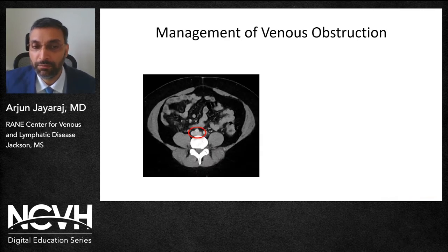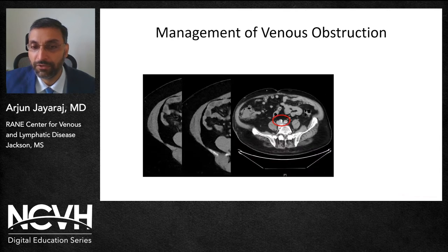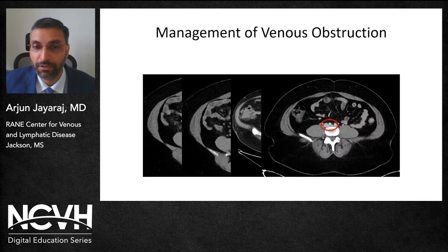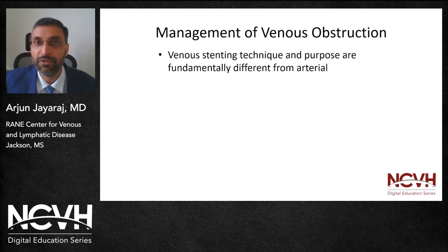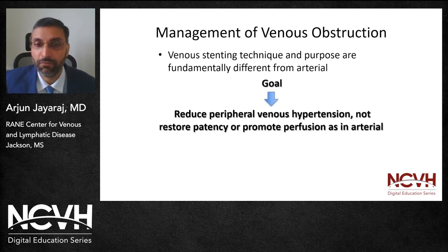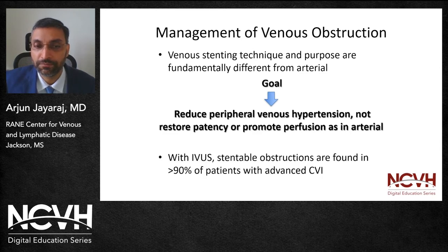A CT scan revealed compression of the left common iliac vein by the right common iliac artery, again suggestive of May-Turner syndrome as the etiology for her symptoms. A few words about venous stenting: the technique as well as purpose of venous stenting is fundamentally different from that involving the arteries. The goal in venous stenting is to reduce peripheral venous hypertension, not restore patency or promote perfusion as in arterial stenting. It's important to use IVUS interrogation because IVUS reveals stentable obstructions in more than 90% of patients presenting with advanced chronic venous insufficiency that is often missed on uniplanar or even multi-planar venograms.